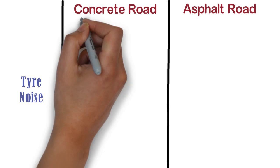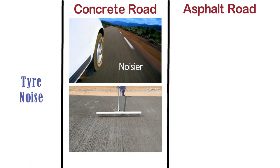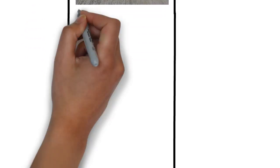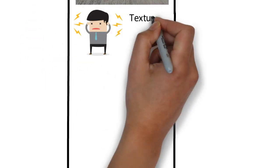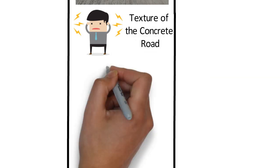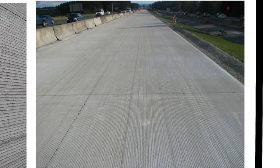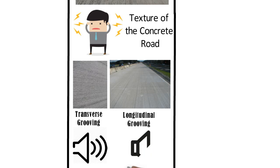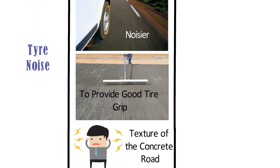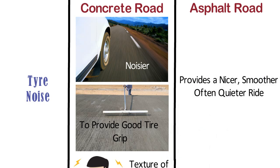Tire noise. Concrete roads can be noisier because they are broomed during construction to make them rough enough to provide good tire grip. However, it must be noted that the cause of noise is not the concrete itself but the texture of the concrete roads. Transverse grooving results in higher noise levels, while longitudinal grooving may help to reduce noise levels. Asphalt roads provide a nicer, smoother, and often quieter ride when relatively new.